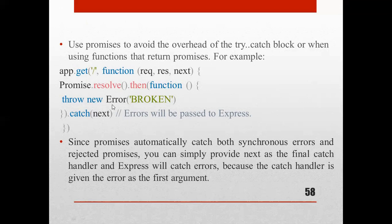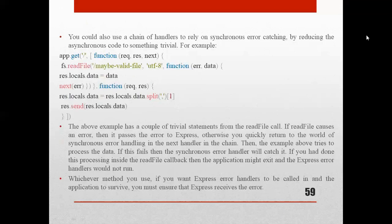Since promises automatically catch both synchronous errors and rejected promises, you can simply provide next as the final catch handler. Express will catch those errors because the catch handler is given the error as the first argument. This is the way we use promises to avoid the overhead of try and catch blocks.